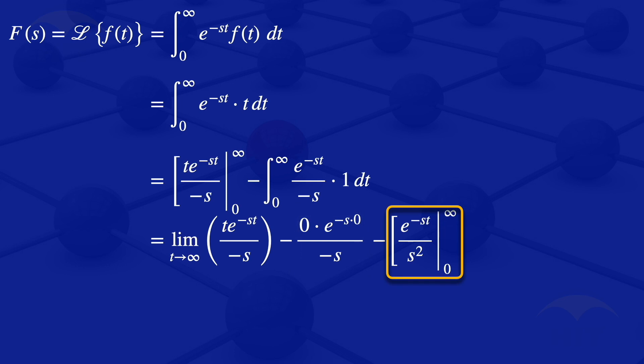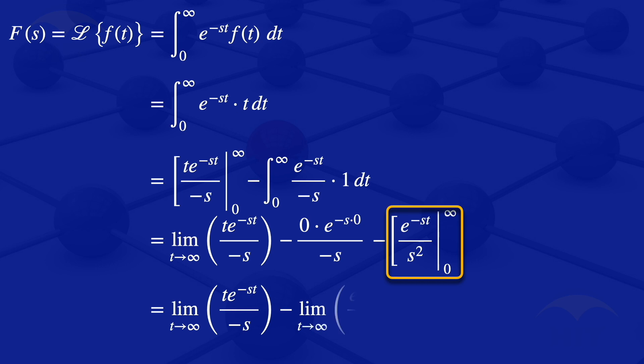Putting in the limits on that second part, we get the limit as t approaches infinity of e^(-st) / s², minus 1/s². After multiplying through by the minus sign that precedes the highlighted part, we obtain: the limit as t approaches infinity of t · e^(-st) / (-s), minus the limit as t approaches infinity of e^(-st) / s², plus 1/s².